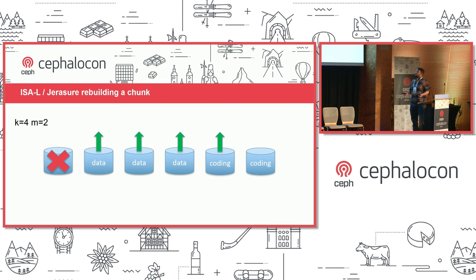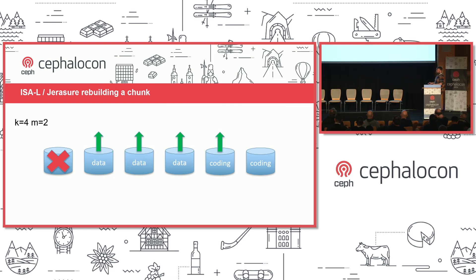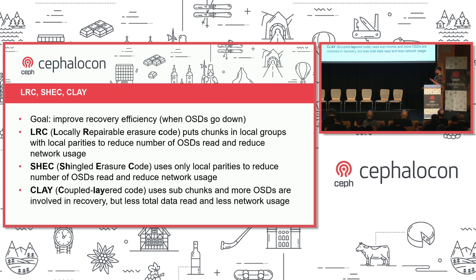One disadvantage with Erasure Coding — specifically with ISA-L and JErasure — is what happens when we lose a chunk. If an OSD or host goes down, to rebuild that chunk and return to full redundancy, we need to read data from K number of other chunks — in this diagram, four chunks for a 4+2 profile. That means lots of disk reads, network traffic, and CPU usage on the host doing the rebuilding.